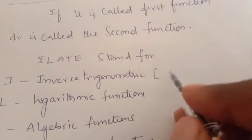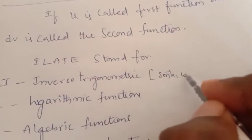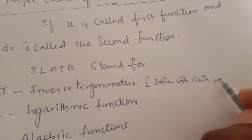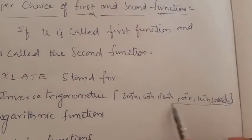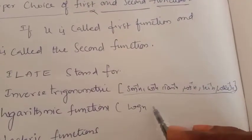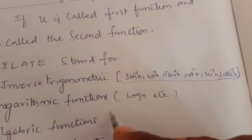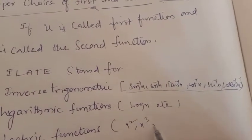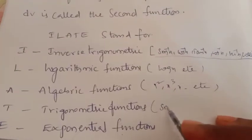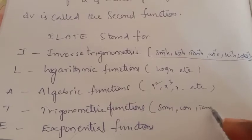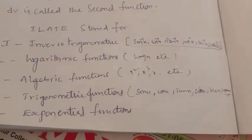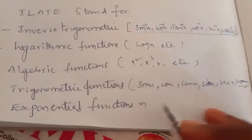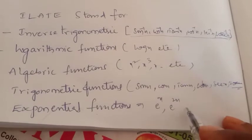Inverse trigonometric functions include sine inverse x, cos inverse x, tan inverse x, cot inverse x, sec inverse x, and cosec inverse x — these six are called inverse trigonometric functions. Logarithmic functions means log x, etc. Algebraic functions include x squared, x cubed, x, etc. Trigonometric functions include the six ratios: sine x, cos x, tan x, cot x, sec x, and cosec x. Exponential functions include e to the power x, e to the power 2x, etc.